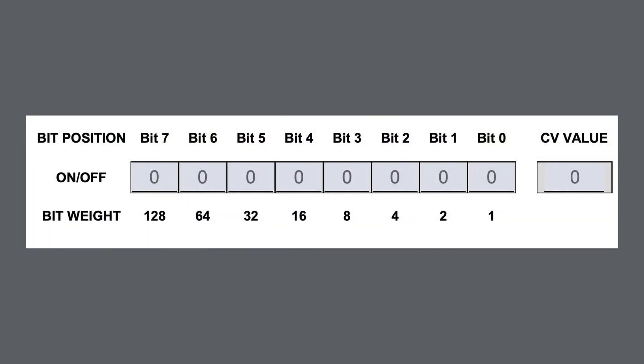It starts off at the right with bit 0, bit 1, bit 2, bit 3, bit 4, all the way up to bit 7, as you can see in this illustration. Now each bit has a value or a weight associated with it. Bit 0 is worth 1, bit 1 is worth a value of 2, bit 2 is worth a value of 4, and bit 3 is worth a value of 8. As you can see the pattern, the number doubles every time you move over to the next bit.